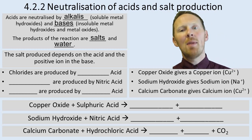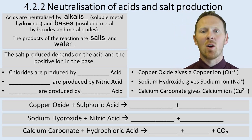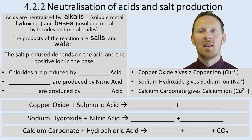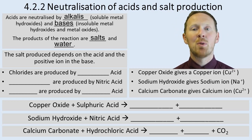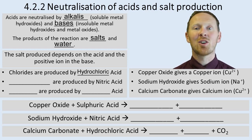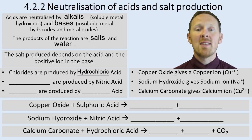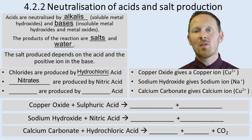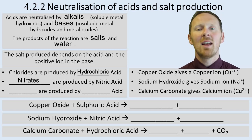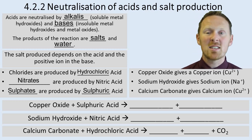The salt you make depends on two things: it depends on the acid, and it also depends on the positive ion in the base. Chlorides are produced by hydrochloric acid, so if you use hydrochloric acid, you're always going to make a chloride salt. Nitrates are produced by nitric acid, so if you want to make a nitrate, you've got to use nitric acid. And finally, sulfates are produced by sulfuric acid — the clue's in the name: sulfate, sulfuric.